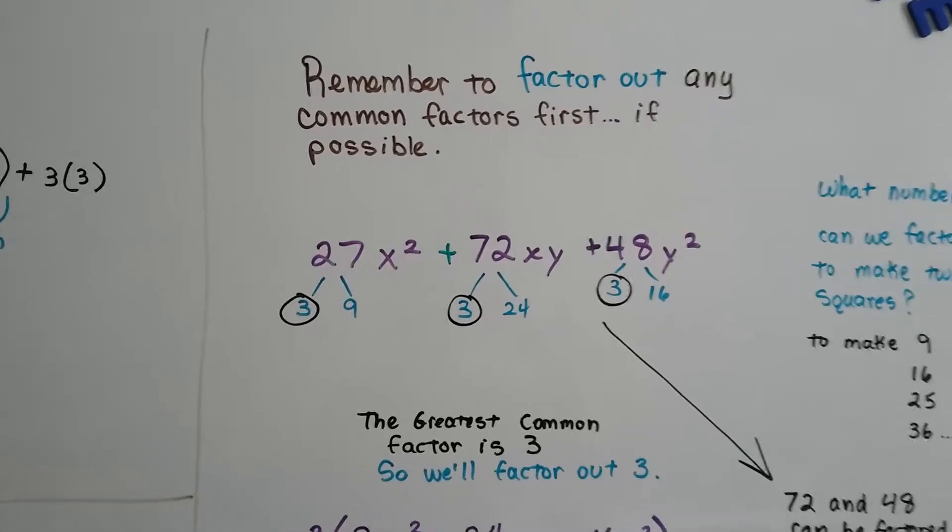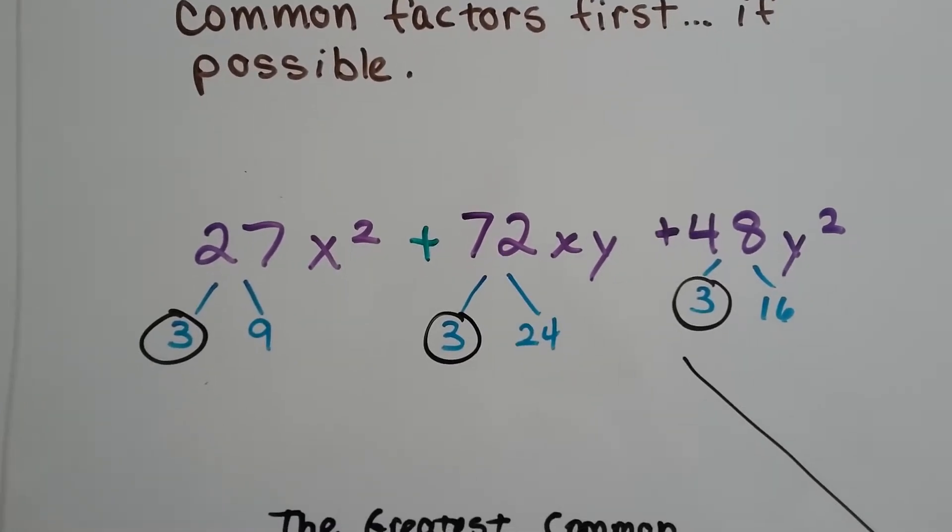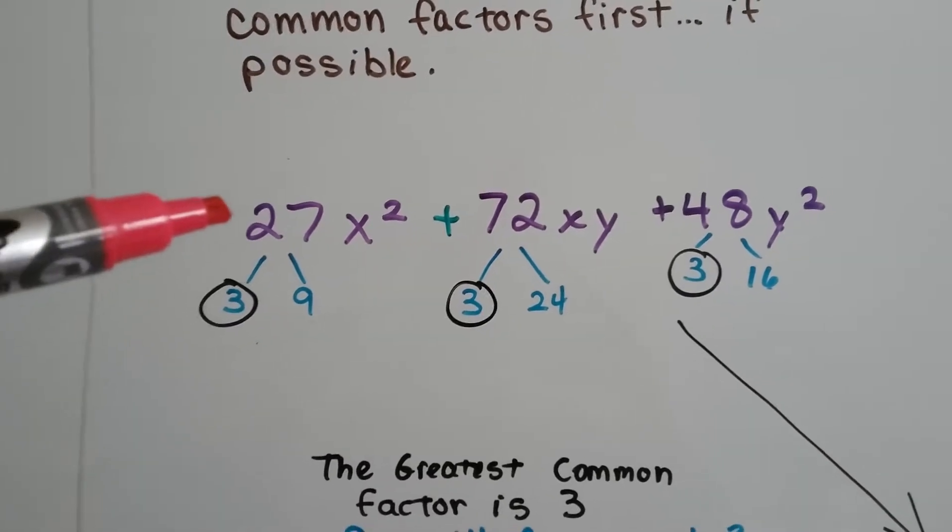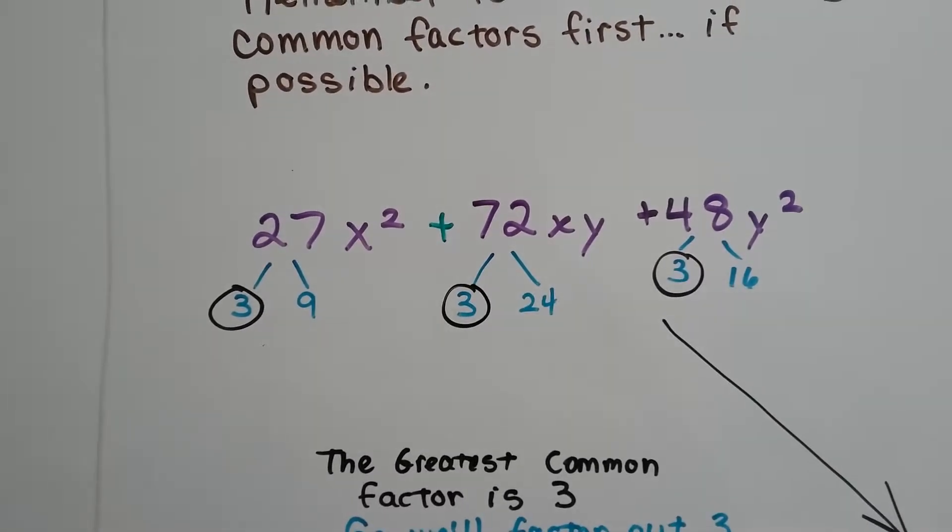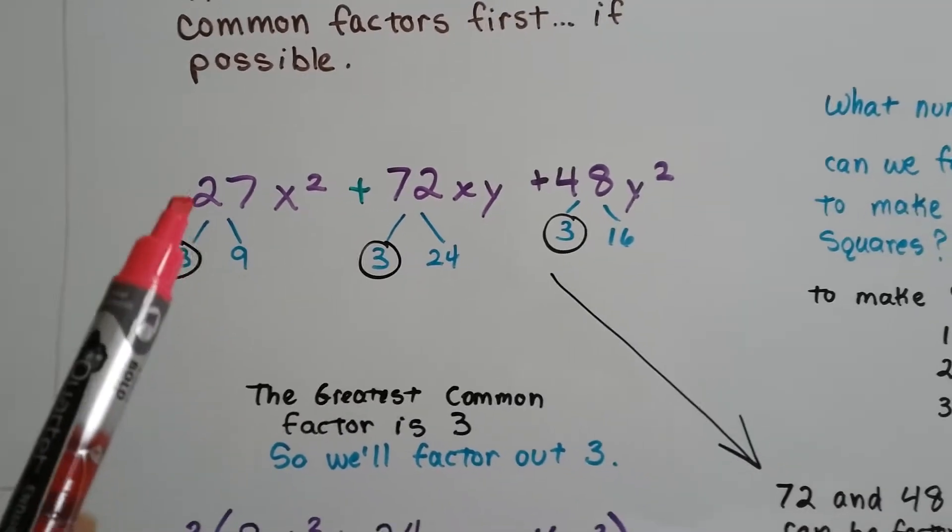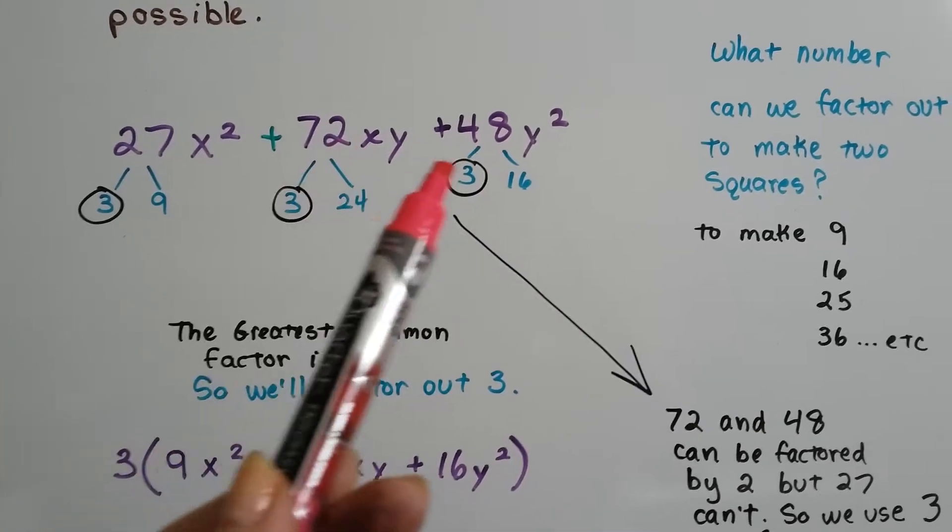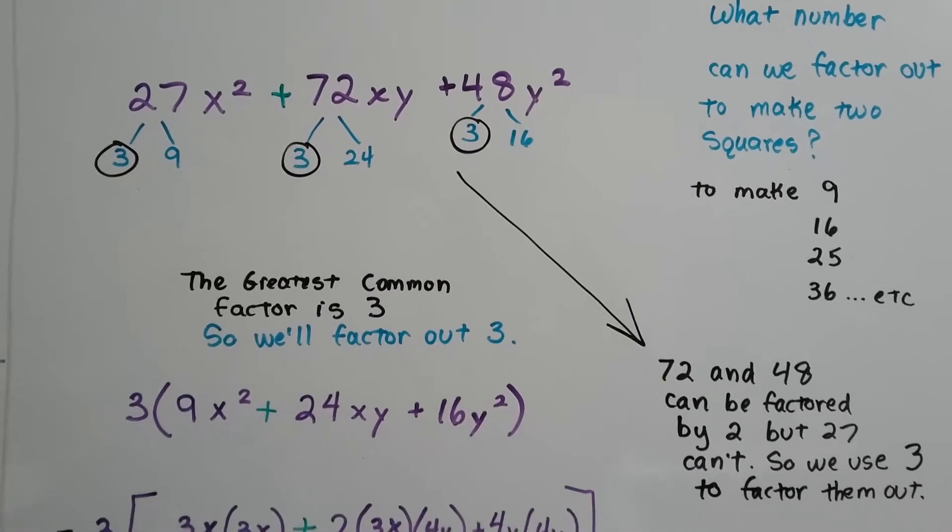So we've got 27x² + 72xy + 48y². When we factor the 27, 2 can't go into it, but a 3 can. 3 times 9, right? Now because this can't have a 2, and this can and this can because they're even, right? It's an odd number. So it can't have a 2 as a factor. Well, the 72 and the 48 can be factored by a 2, but the 27 can't.